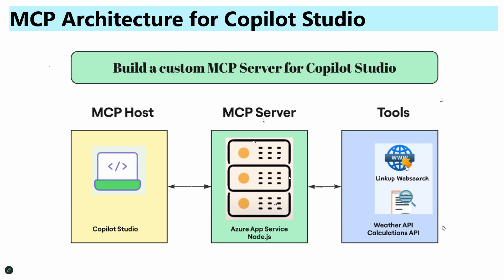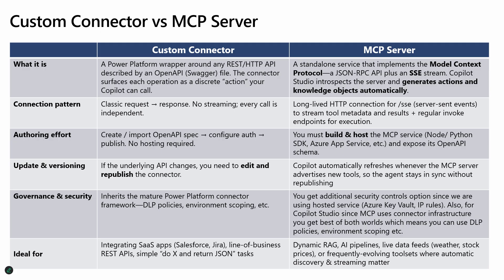And this MCP server then calls out different tools. Tools could be different REST endpoints or RAG pipelines that you create based on your use case. Also, the connection between Copilot Studio and MCP server is done using a custom connector. So one of the questions that we get is, what's the difference between MCP server and custom connector? Why would we need to create an MCP server? I did put a slide to show what the difference is, hopefully this helps clear some of the doubts you might have.